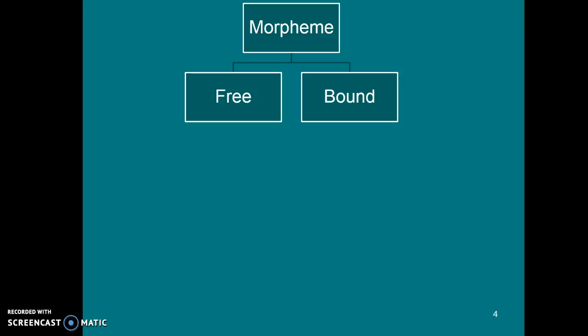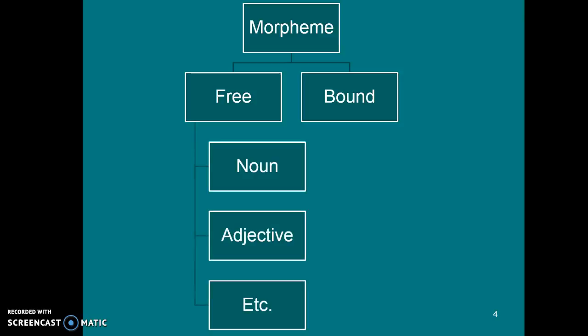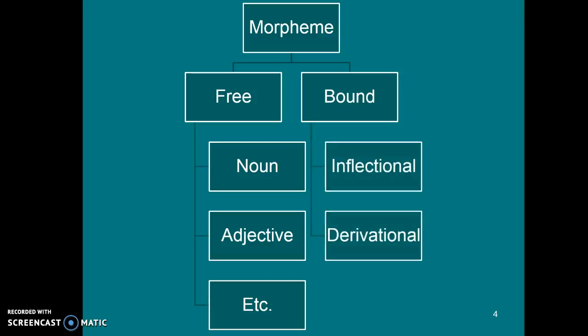We can further divide free morphemes and bound morphemes into categories. Free morphemes can be divided into different types of words — since free morphemes are, by and large, words, we can say free morphemes can be nouns, adjectives, adverbs, or verbs. And bound morphemes can also be divided into particular types: we have inflectional morphemes, which are grammatical morphemes, and derivational morphemes, which are grammatical morphemes that change the part of speech.